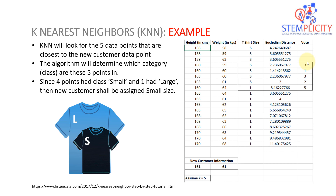Now for classification: among the five selected neighbors, we count how many were previously classified as small and how many as large. We run a majority vote. If four said the new point belongs to small and one said large, then small wins. The new customer's data point is classified as small class — that's how K-Nearest Neighbors works in practice.